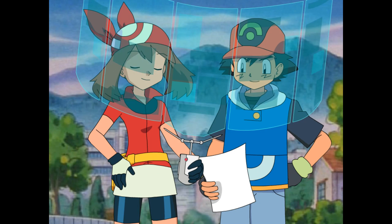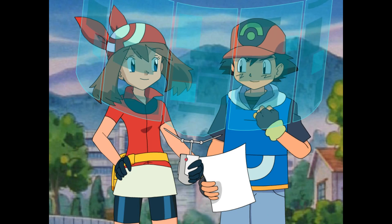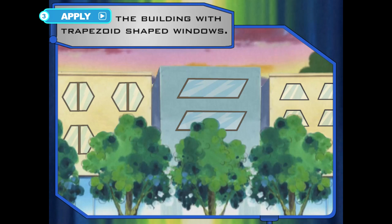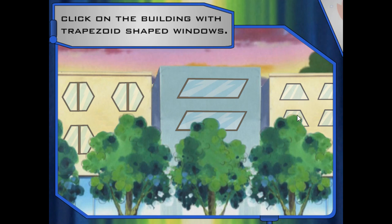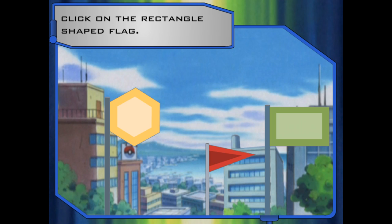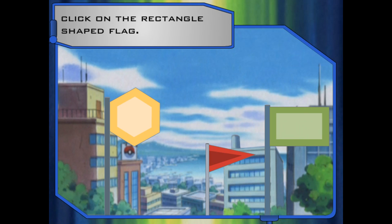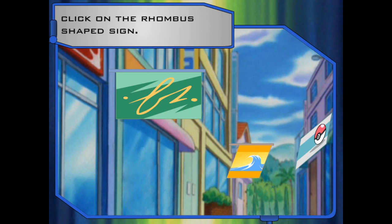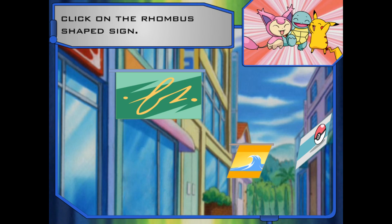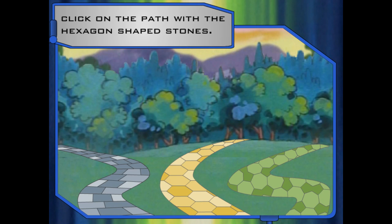That was super work! We need to get to the contest, though. It's time to get going and put all this polygon information to work! Come on! First, we need to find a building with trapezoid-shaped windows — click on the correct building. Awesome! Now we need to find a building with a rectangle-shaped flag — click on the correct flag. Good job! Which store has the rhombus-shaped sign? Click on the rhombus-shaped sign. Now we're supposed to follow the path with the hexagon-shaped stones — click on the path with the hexagon-shaped stones.